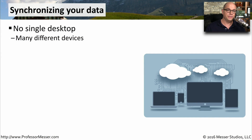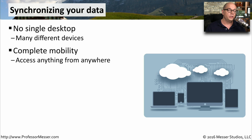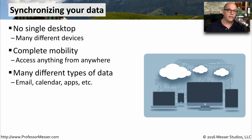Very few of us have a single device we're using. We probably have a computer or a tablet at home, a computer at work, and a mobile device that we take from one place to the other. We rely on this mobility and need all of our information available whenever we might need it, including different kinds of data like email messages, text messages, video, or audio.